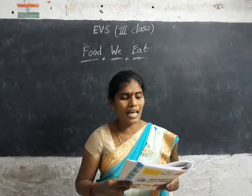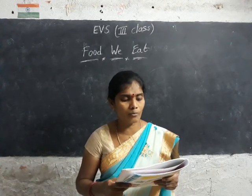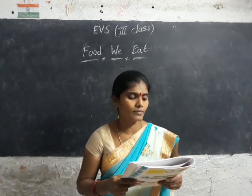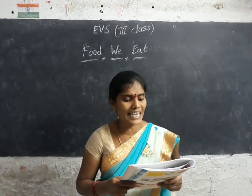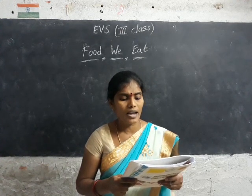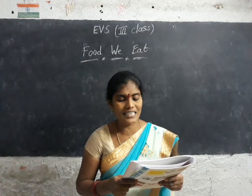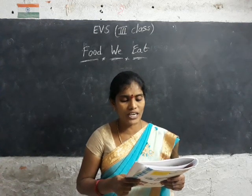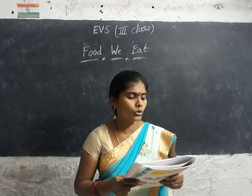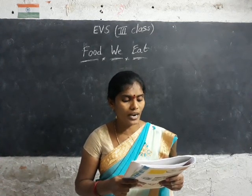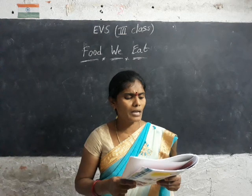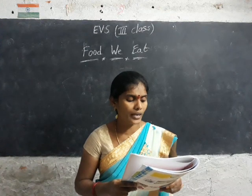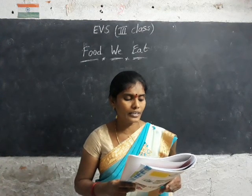Why do people have different food habits? Food habits depend on their customs, culture, nature of work, climate, local crops, and age. Wheat is the staple food in North India while rice is the staple food in South India. South Indian food is spicier than North Indian food. Fish and seafood are popular in coastal states like West Bengal, Odisha, and Kerala. Special dishes like payasam, pulihora, and undralu are prepared during festivals.